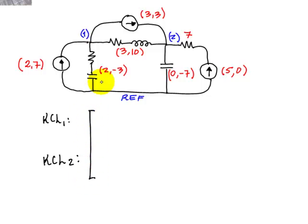The coefficient for V1 is going to be 1 over (2,-3) plus 1 over (3,10). The sum of the conductances connected to node 1. And what about this other term?